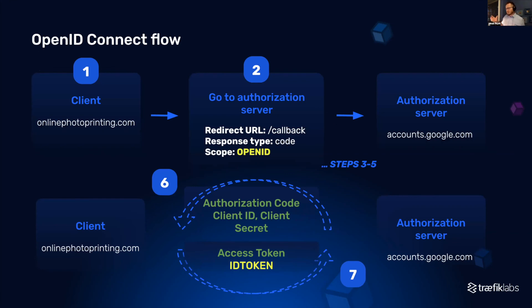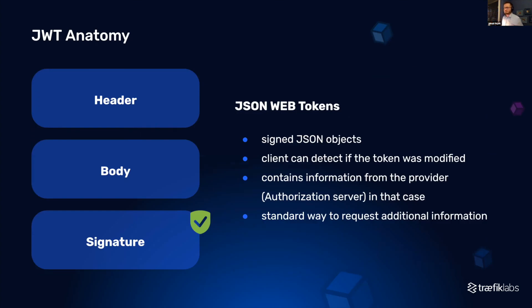Let's think about the difference between the OAuth process I just described and where OpenID actually fits in. In the first and second steps, if you're going to use OpenID, we need to just add the scope called 'openid'. If our authorization server and client support OpenID Connect, we'll receive an ID token. Based on that, together with the access token, we'll be able to authenticate and get access to specific resources on a resource server. The other steps remain the same — only two very tiny changes have been added in step two and in the token exchange step.